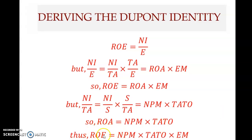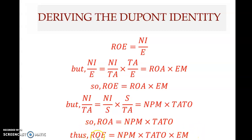Therefore ROE equals net profit margin multiplied by total asset turnover (which is ROA), multiplied by the equity multiplier. Return on equity — the shareholder return — depends on three factors: net profit margin, which reflects cost efficiency; total asset turnover, which reflects asset efficiency; and the equity multiplier, which reflects leverage or how much debt the company uses. This equation is called the DuPont identity.